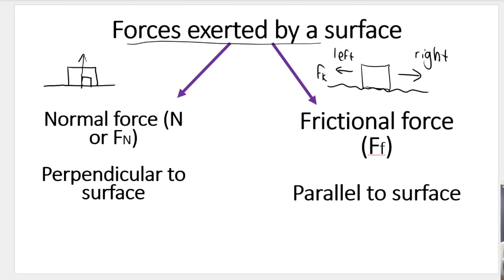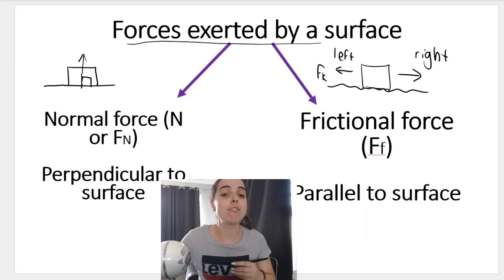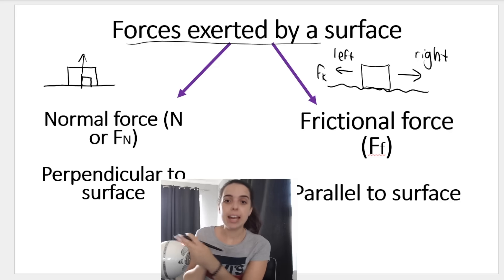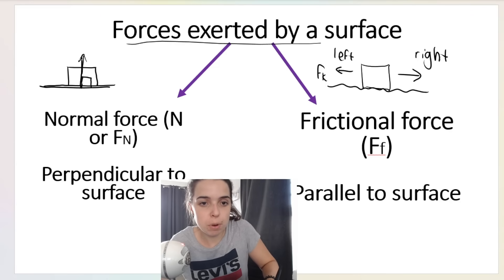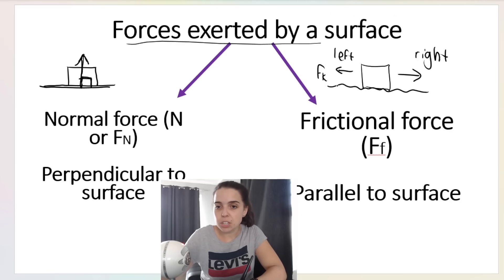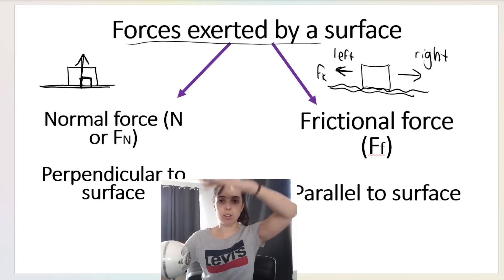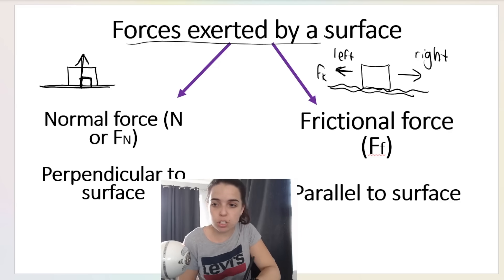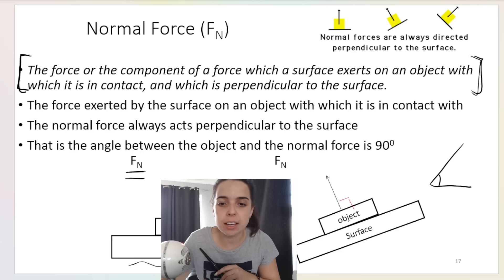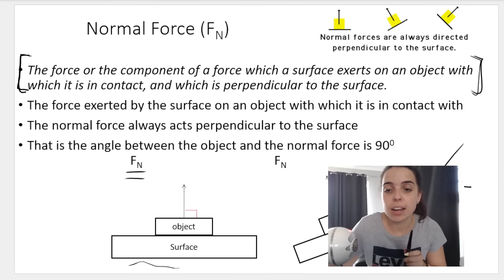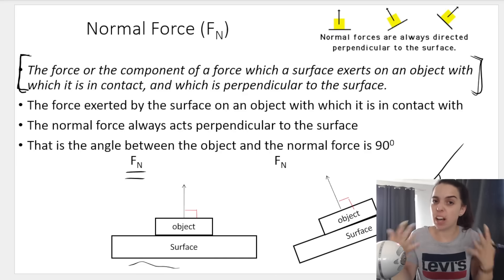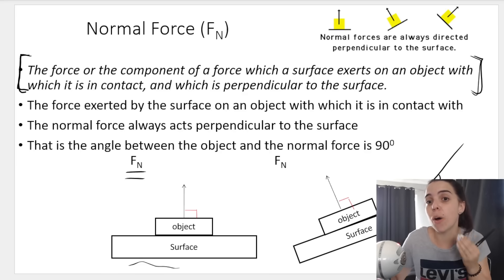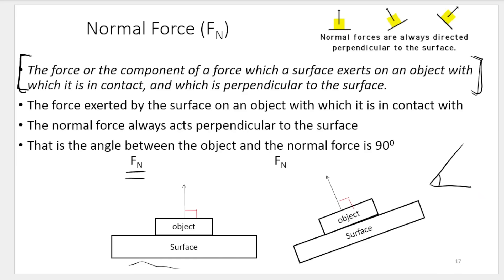Then we've got forces exerted by a surface. I've got two forces: the normal force, which is perpendicular to the surface, and the frictional force, which is parallel to the surface. The normal force acts at a 90-degree angle — perpendicular — to the surface. So if I tilt the surface, the normal force is still 90 degrees relative to that surface. I will be going over the normal force in more detail in another video, showing you how to calculate it, which is very important before tackling Newton's questions.